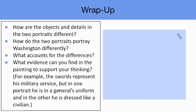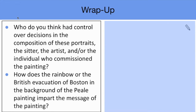Wrap up the lesson by facilitating a discussion using any of the following questions: how are the objects and details in the two portraits different? How do the two portraits portray Washington differently? What accounts for those differences? What evidence can you find in the painting to support your thinking? Who had control over decisions in the composition of these portraits — the sitter, the artist, and/or the individual who commissioned the painting? How does the rainbow or the British evacuation of Boston in the background of the Peale painting impart the message of the painting?